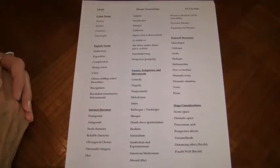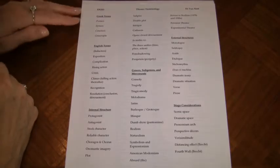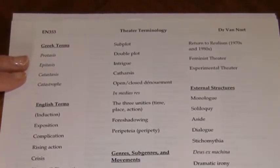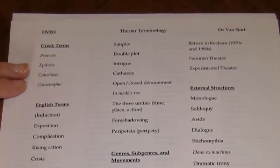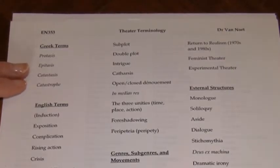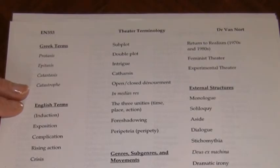Let's look now at the terminology specific to the theater. You have these Greek terms. Not so much that Shakespeare would have used these terms, but he would have understood Greek and Roman plays where these four terms labeled the different movements of the action: protasis, epitasis, katastasis, and catastrophe, which is a good friend for you.